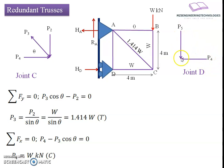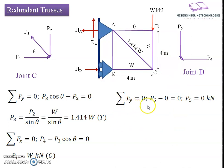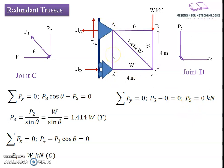Moving to joint D, we have two forces: P4 (already known) and P5. Applying equilibrium in the vertical direction: P5 minus 0 equals 0 — since there is no vertical force to balance, member AD carries zero force. So P5 equals 0. We have now completed the estimation of forces in all members for the statically admissible case.